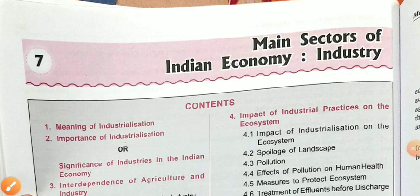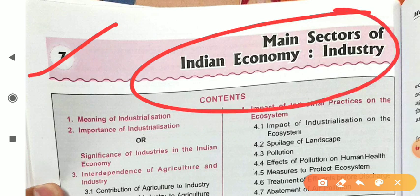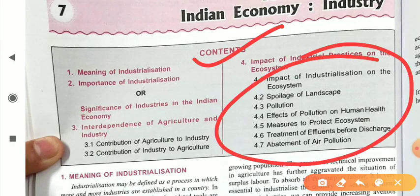Good morning dear students. We are going through chapter 7, which is about the main sectors of the Indian economy and the main focuses towards the industry. In our previous video, we discussed the meaning and importance of industrialization. Today we will discuss about the impact of industrial practices on the ecosystem — what are the different impacts of those industries which grew after the pre-independence period and after the industrialization process.